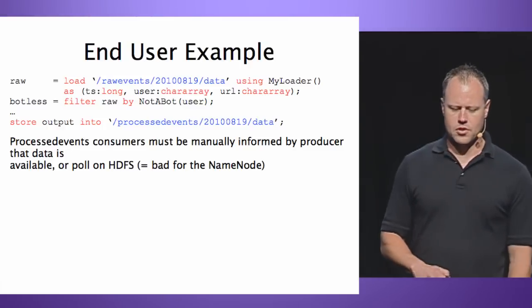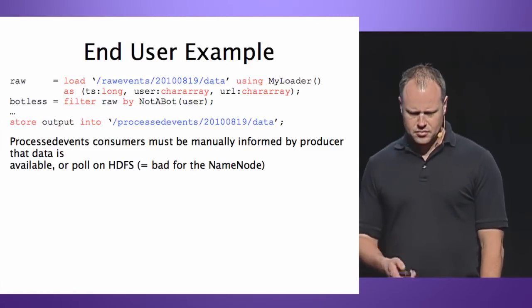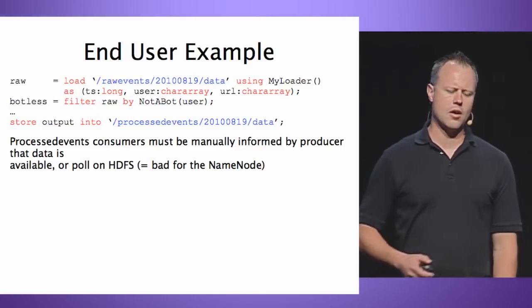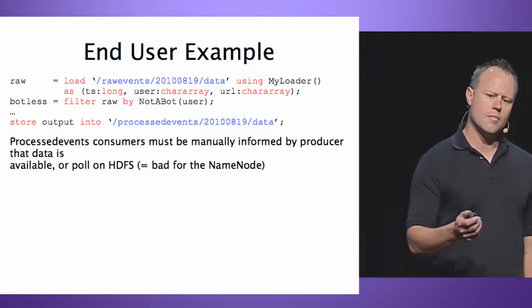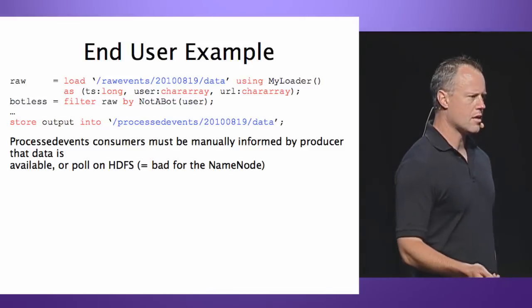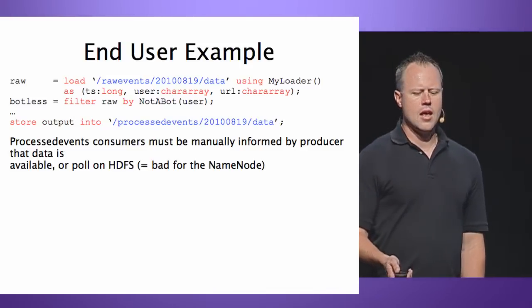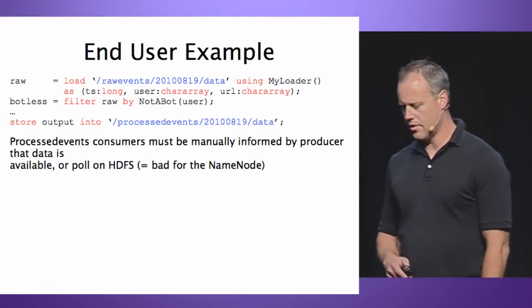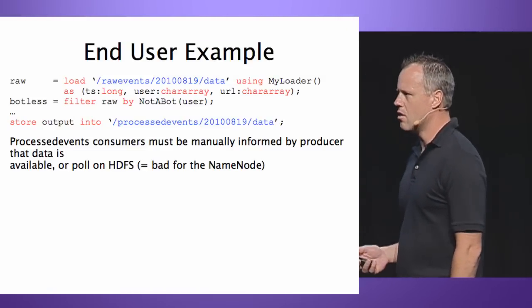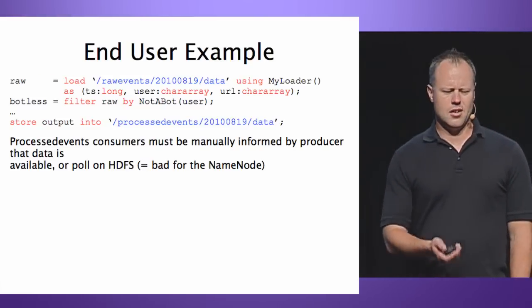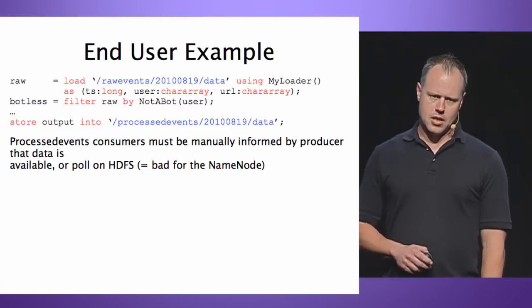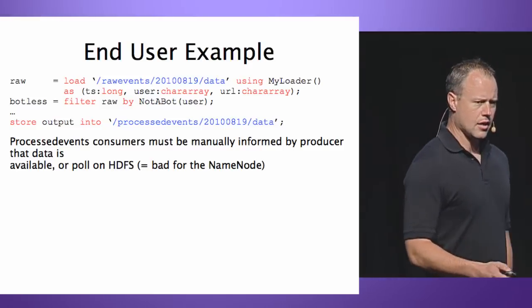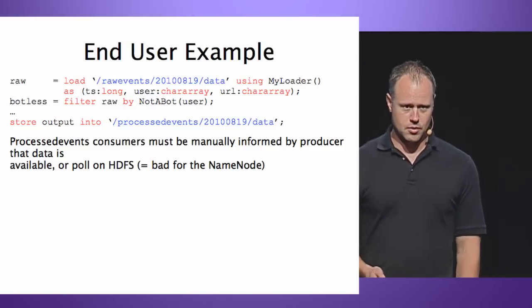The same issue applies to the store function. And then, how do you even know when you can run this Pig Latin script? How do I know when that raw events data is ready? How do I tell my users when I'm done processing it? How do I even know what that schema is — I have to declare it there. This is the same in MapReduce; you would have to know what the data is. It's probably written on some wiki page somewhere. At Yahoo, I can just say that doesn't work out real well.